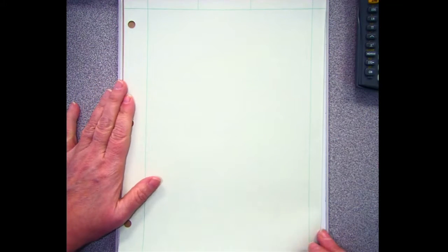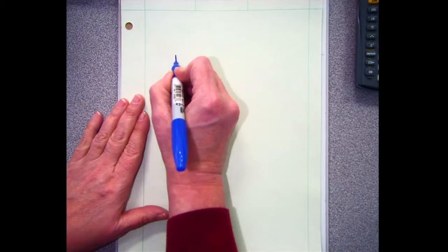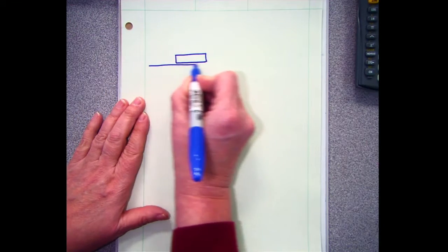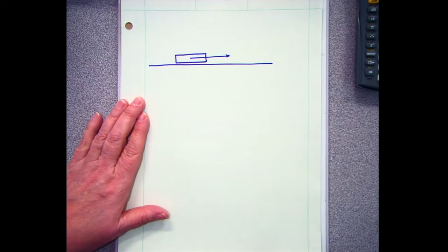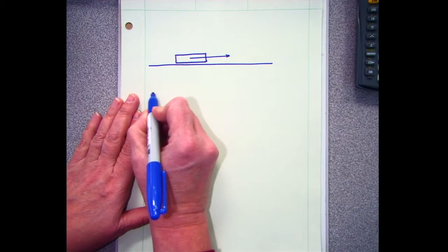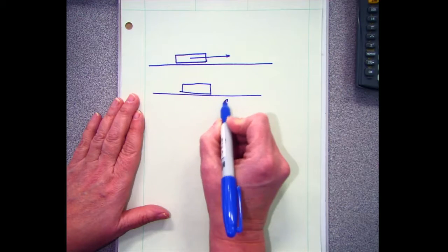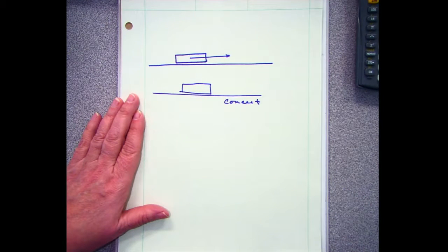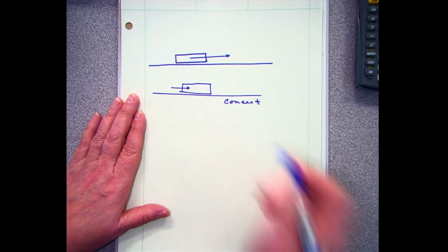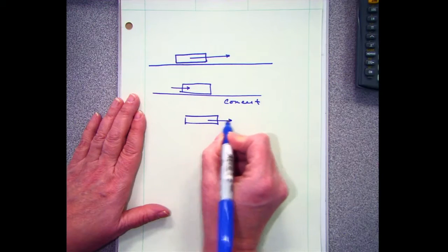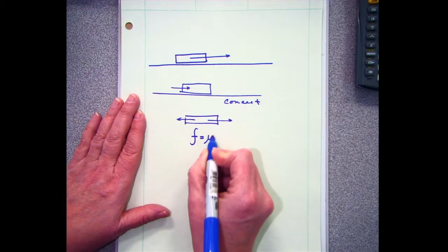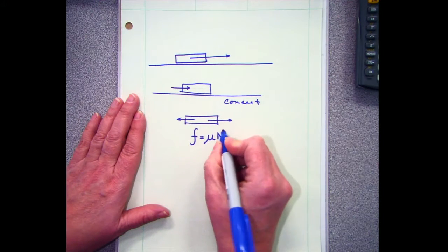So far we've dealt with forces and our first condition of equilibrium. If I take a hockey puck moving along, it's nearly frictionless, so we don't have to worry about it too much. But if I have a block of wood on concrete, something happens. If I tap this block of wood on concrete, it's going to move but not very far. We talked about that resistive force and defined friction as a coefficient times the normal force.